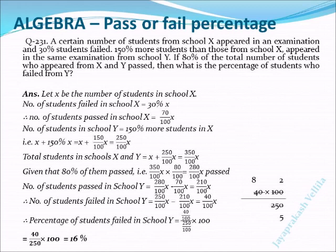Today's question is regarding pass percentage or fail percentage of students in an examination. A certain number of students from school X appeared in an examination and 30% of students failed. 150% more students than those from school X appeared in the same examination from school Y. If 80% of the total number of students who appeared from X and Y passed, then what is the percentage of students who failed from Y?